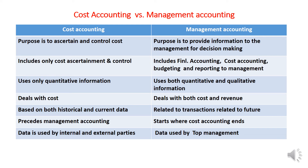Cost accounting is based on historical and current data — we use past data as well as budgets and future data. But management accounting is related to future activities only. Cost accounting precedes management accounting; management accounting is broader than cost accounting.